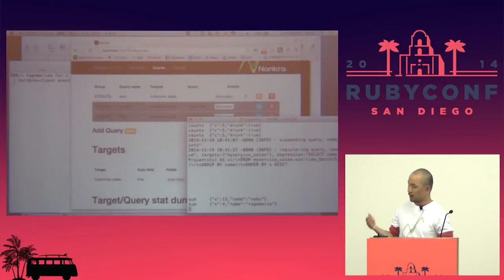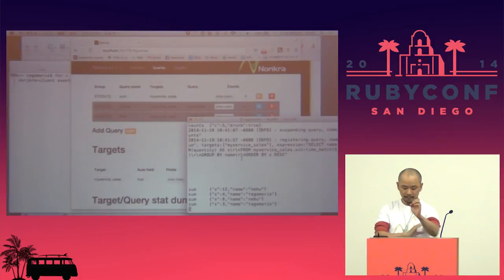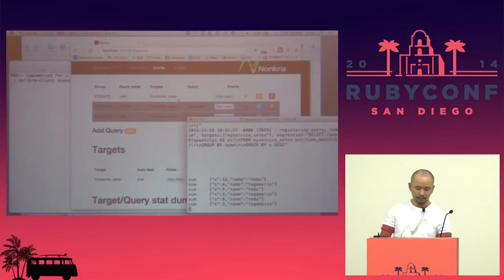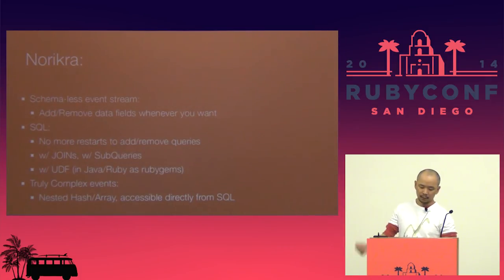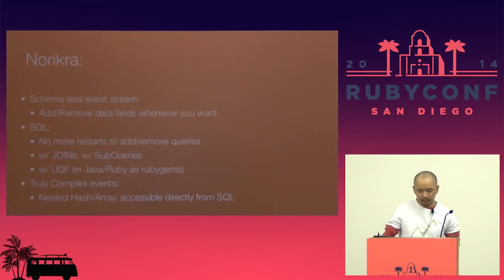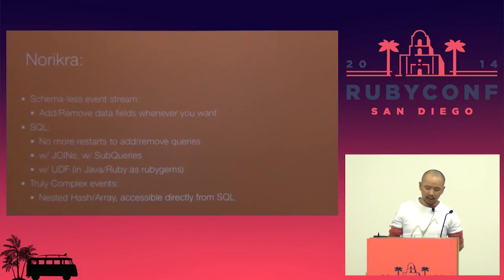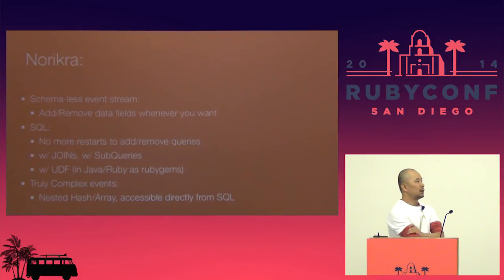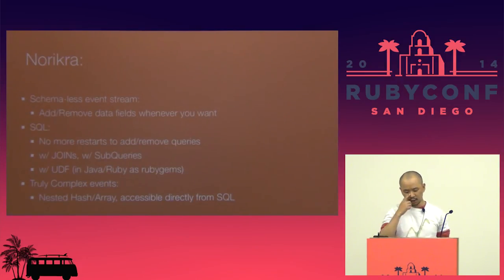We can get even more aggregated results by an SQL query for this input stream. That is how Norikra works. With Norikra, we can add or remove queries whenever we want. Norikra supports SQL joins and sub-queries, and we can add user-defined functions written in Ruby, Java, or any other JVM languages. We can publish that UDF as a RubyGem.